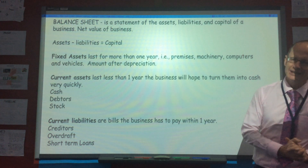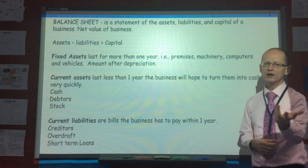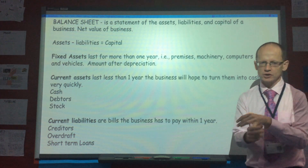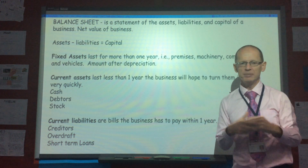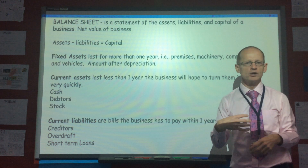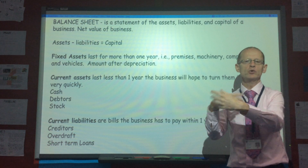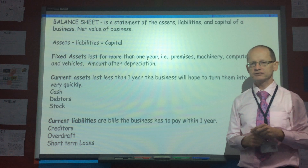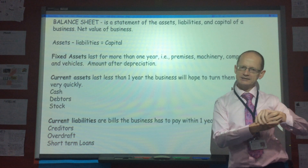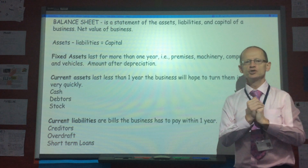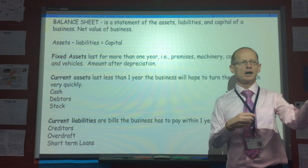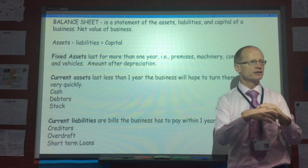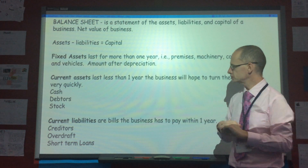Current liabilities are bills which a company has to pay relatively soon, say within one year. We've got things like creditors — for example, a big supermarket like Carrefour will buy products from Coca-Cola and hopefully pay them in a relatively short period of time — bank overdrafts, which is basically a minus at the bank, and sometimes short-term loans. In China, banks don't really issue overdrafts; they instead issue short-term loans.